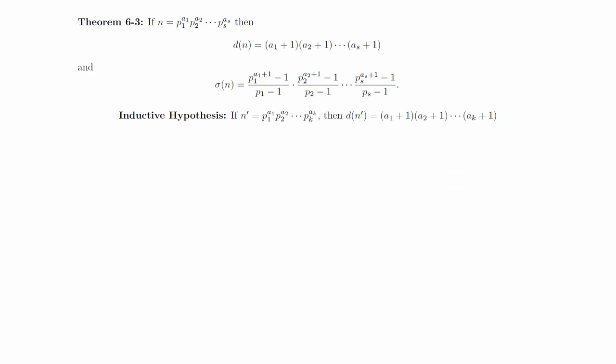So now suppose that the theorem is true when there are k or fewer distinct prime factors, and suppose that n equals n prime times p sub k plus 1 to the a sub k plus 1, where n prime has k distinct prime factors and p sub k plus 1 does not divide n prime. We need to use this notation in order to be consistent with the notation provided in the statement of the theorem.